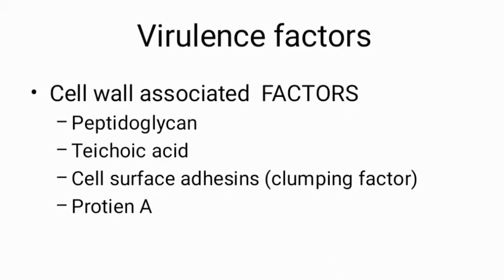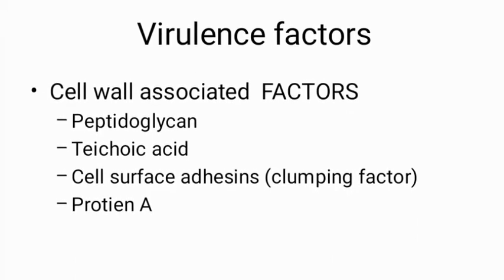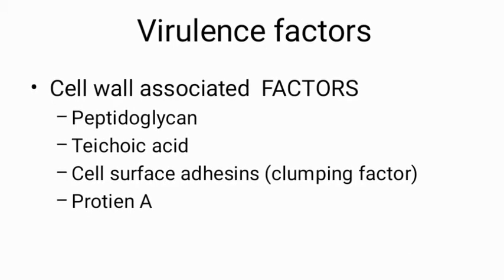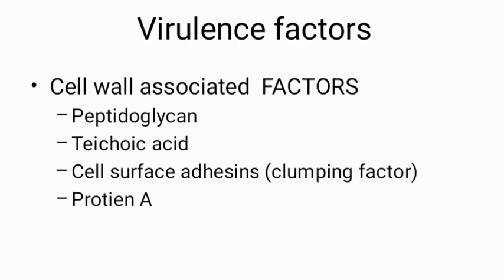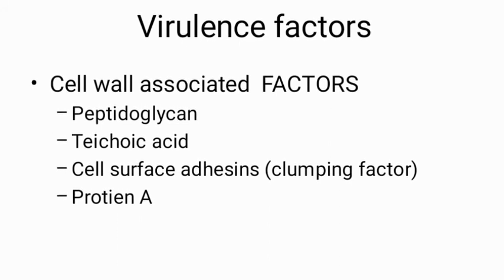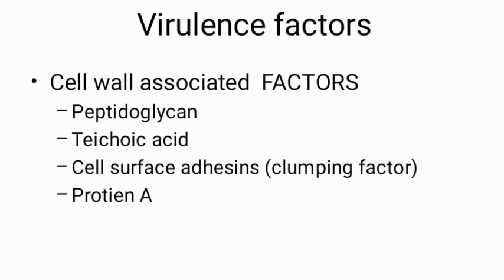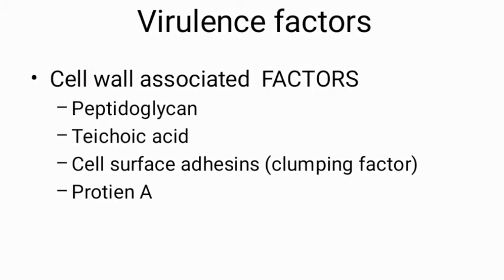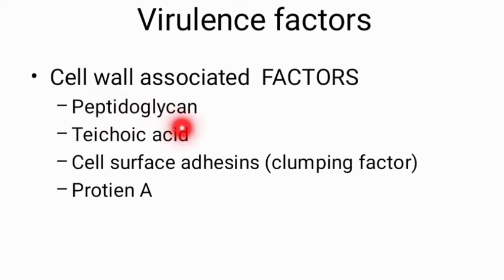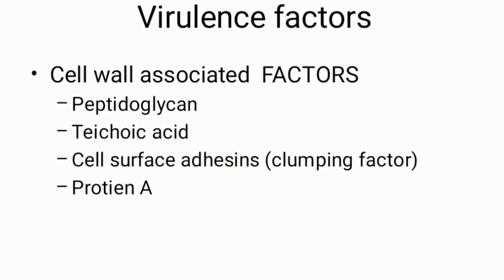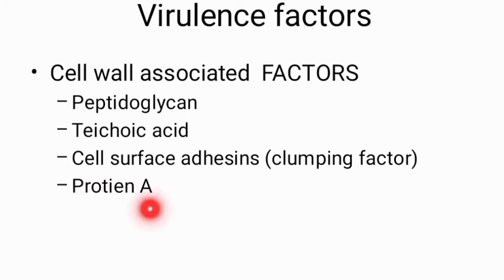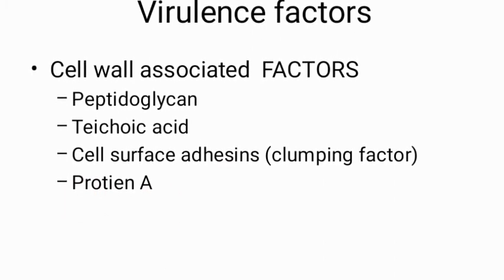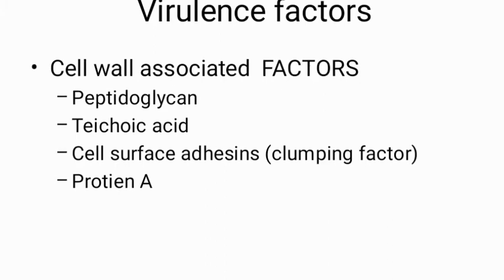The virulence factors of Staphylococcus aureus are the mechanisms by which it causes infections in humans. The first category is cell wall-associated factors. These include peptidoglycan, teichoic acid, cell wall surface adhesins, and Protein A — all present on the cell wall of Staphylococcus bacteria.